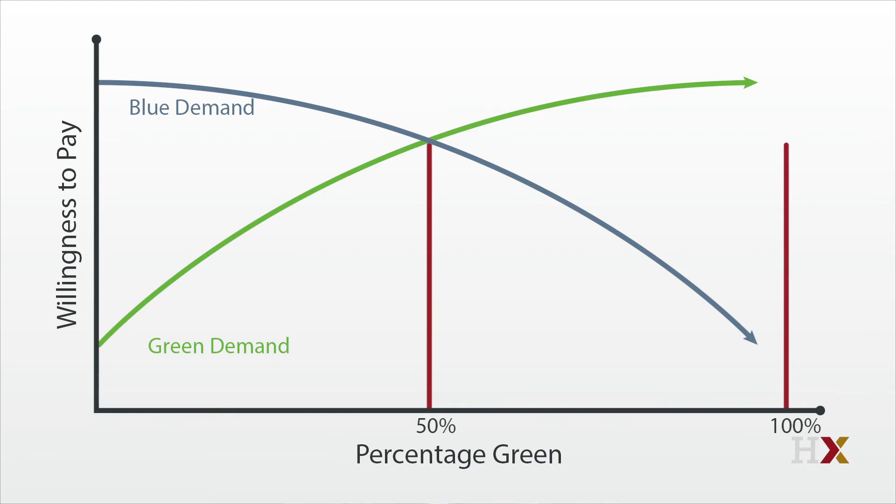If the share suddenly switches from 50 to 51% green, then suddenly the greens are willing to pay more for homes in the area than the blues. And the neighborhood starts quickly tipping towards being all green.